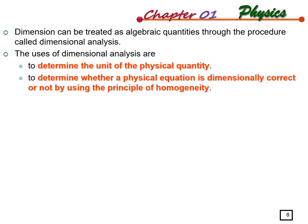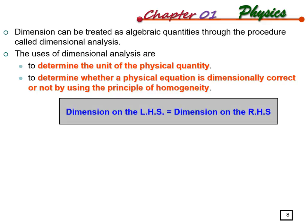To determine homogeneity, we look at two sides of the equation: the left-hand side and the right-hand side. If both sides are balanced - meaning the dimensions are equal on both sides - then we have homogeneity. We can also use dimensional analysis to derive and construct physical equations.